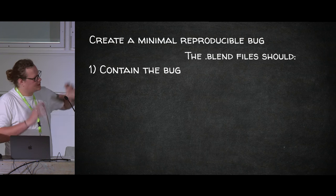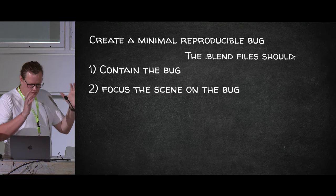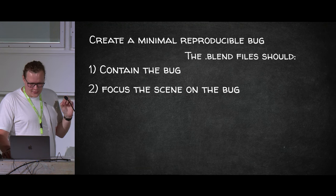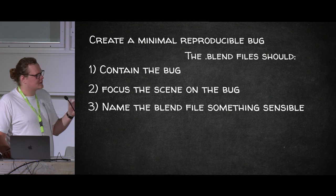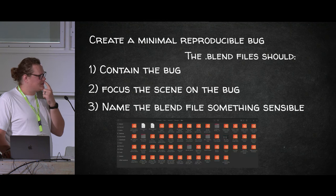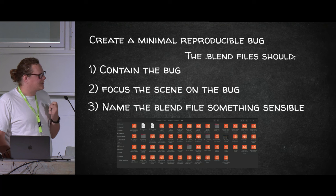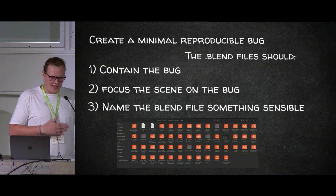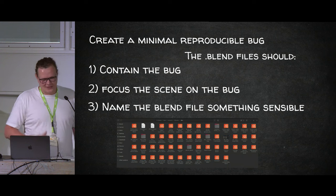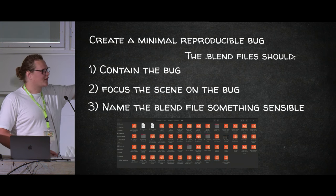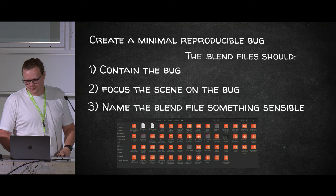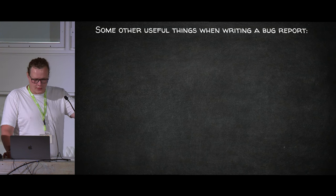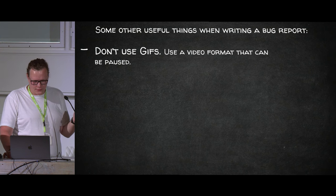To summarize: when creating a minimally reproducible bug file, at a minimum it should contain the bug, the whole scene should focus on the bug, and it should be as minimal as possible. Also name your blend file something sensible. When I go through bugs I never name them sensibly — I end up with a folder of 'nla_underscore_problem_underscore_one' — and people who work on bugs all day will really appreciate a sensible filename.